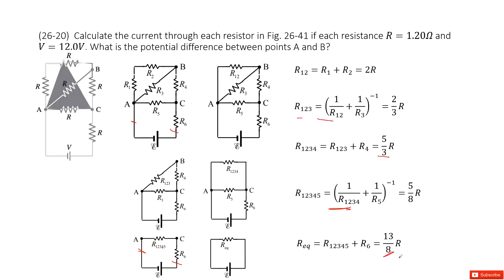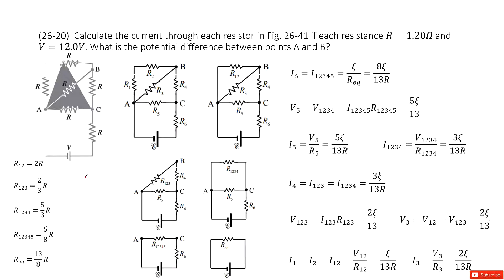Now we have the equivalent resistance for the circuit. The next step is to find the total current. I6 is in the main branch, so I6 equals I1.2.3.4.5. This current in the main branch should equal I1.2.3.4.5.